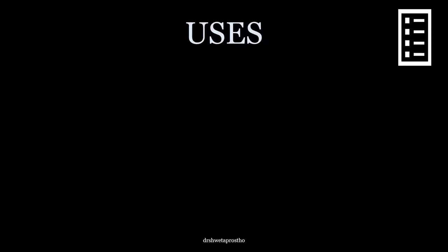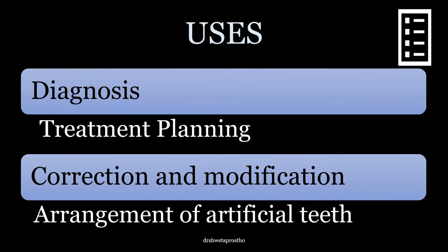What are the uses of articulators? First is diagnosis — diagnosis of the dentulous, partially edentulous, and completely edentulous cases by recording the tentative jaw relations. Second is making the treatment plan. Third, for the correction and modification of the occlusion of the normal dentition or any existing prosthesis — for this we need to mount it on the articulator. And of course, in the completely edentulous patient, we do the arrangement of artificial teeth on the articulator.